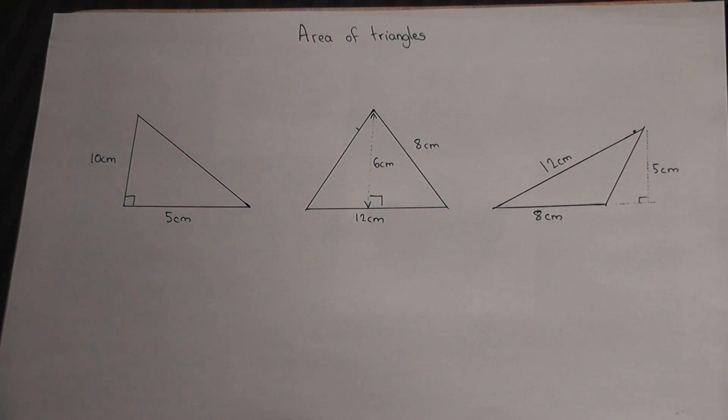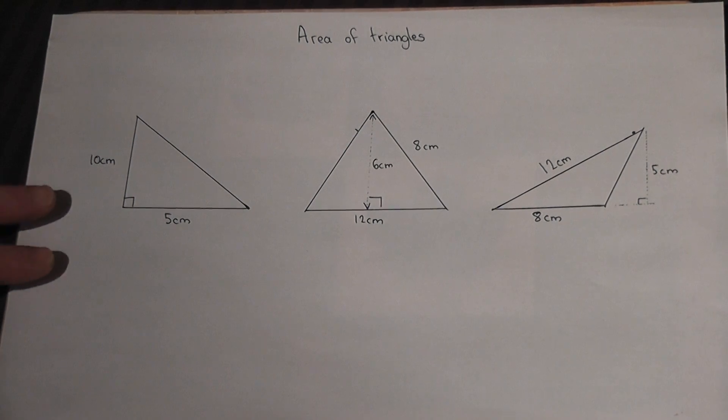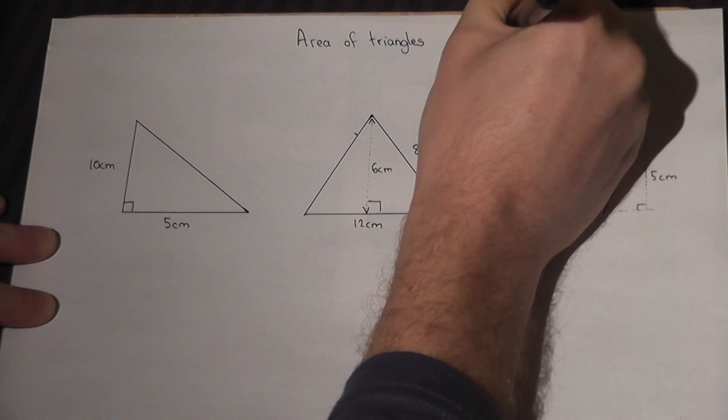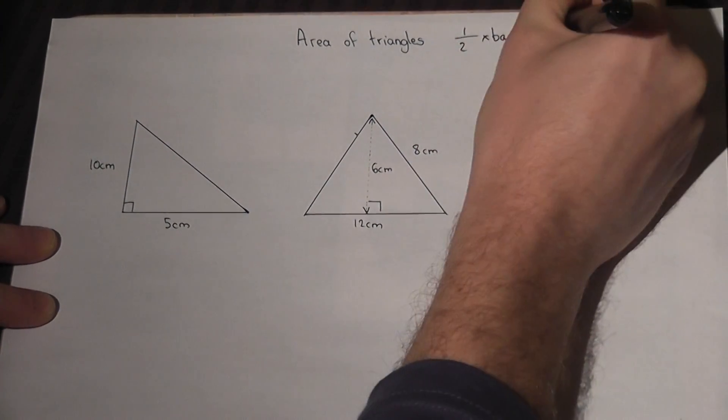This video talks through three examples of the area of a triangle. Now the area of a triangle is given by a half times base times height.